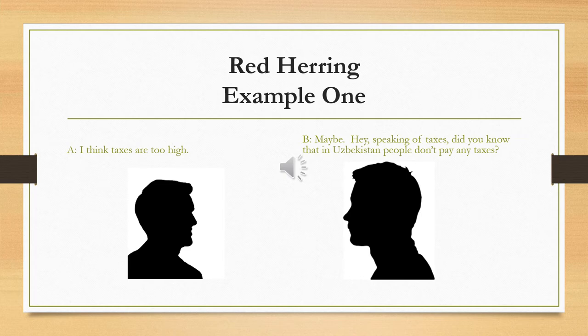With straw man, the relevant concept to distinguish it is distortion — the person committing the fallacy distorts the original argument and attacks the distortion. The key idea in red herring is slightly different. Here we don't have a distortion of the original position, but rather a distraction onto a new and different topic. It's like a hunting dog following a trail getting distracted by the scent of red herring fish being dragged across the trail. For example, person A says 'I think taxes are too high.' Person B says, 'Maybe, hey, speaking of taxes, did you know that in Uzbekistan people don't pay any taxes?' That has nothing to do with the original point. Person B is just going onto a completely different topic — that's the key feature of red herring.